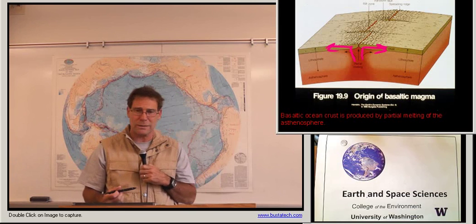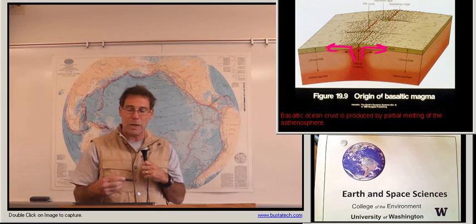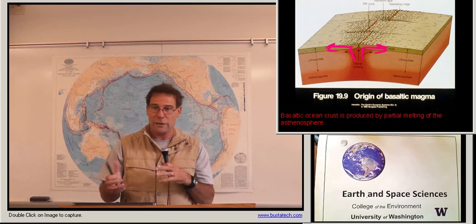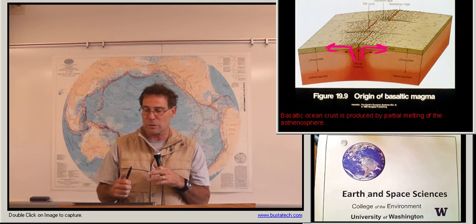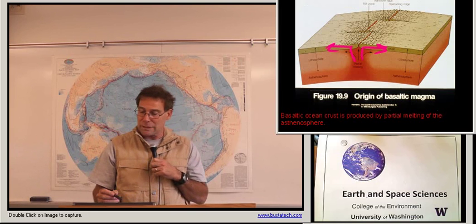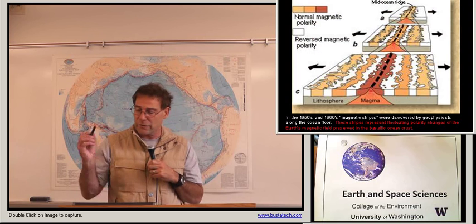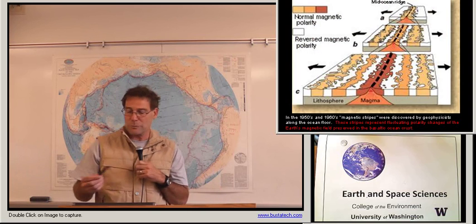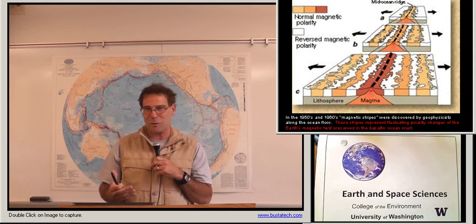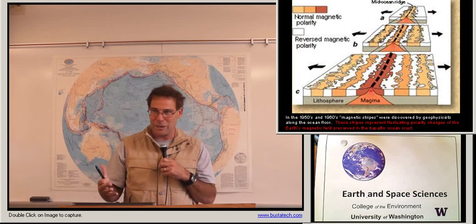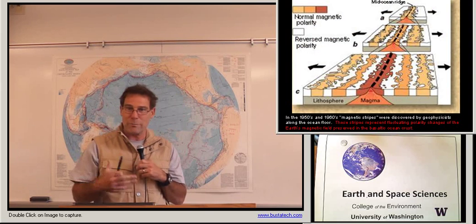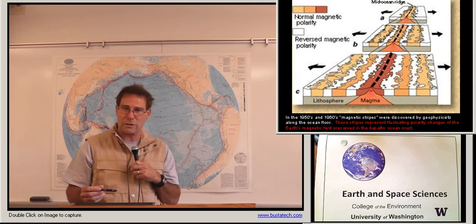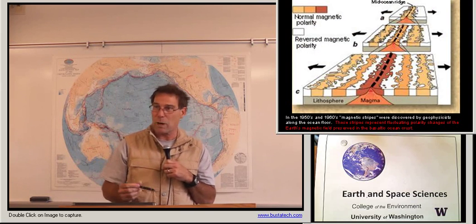We've been aware since the 19th century about the possibility that the continents were drifting — you remember Alfred Wegener and the shapes of South America and Africa appearing to match up. But it really wasn't until the 1950s and 1960s when they were mapping the ocean floor, largely because the U.S. military and the Soviet Union wanted to map the ocean floor for submarine routes, that this evidence became clear.